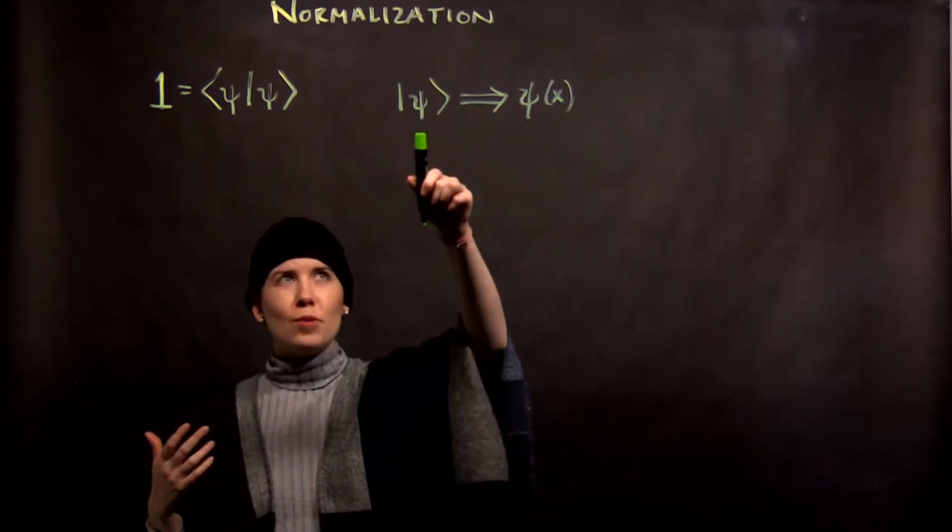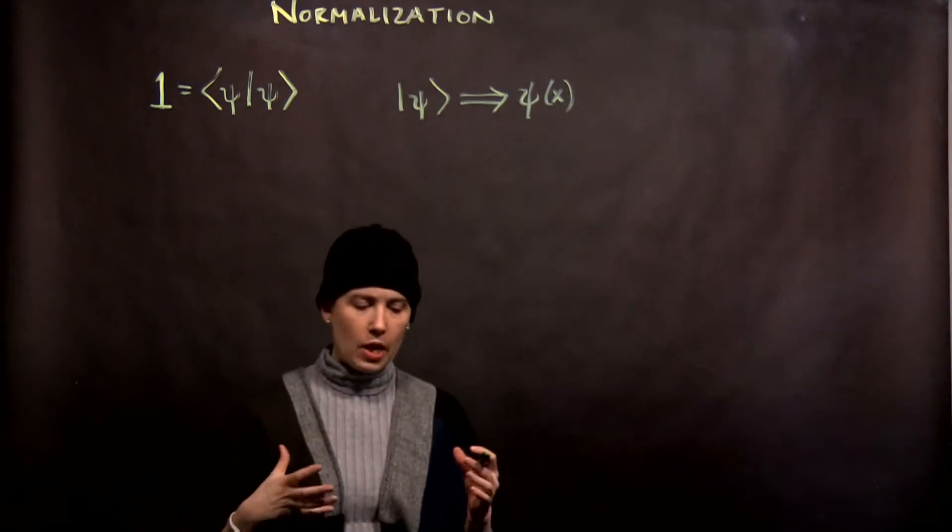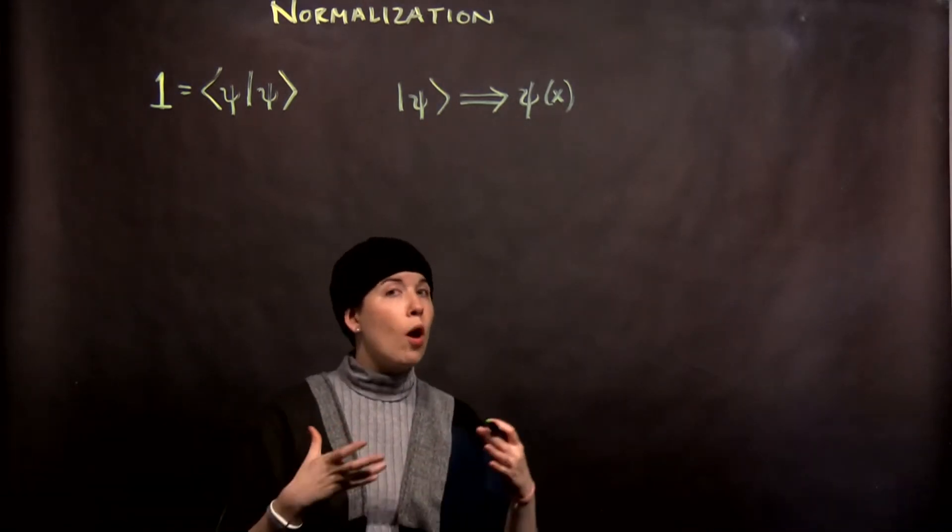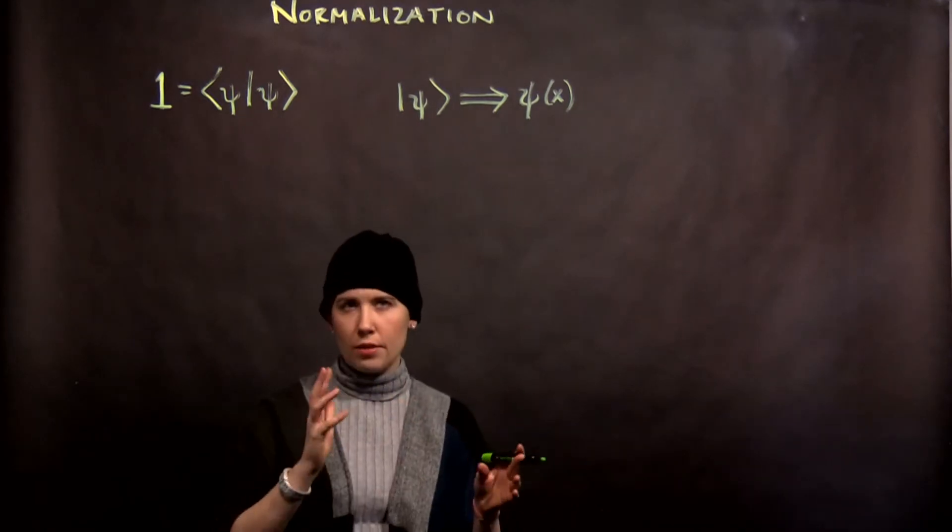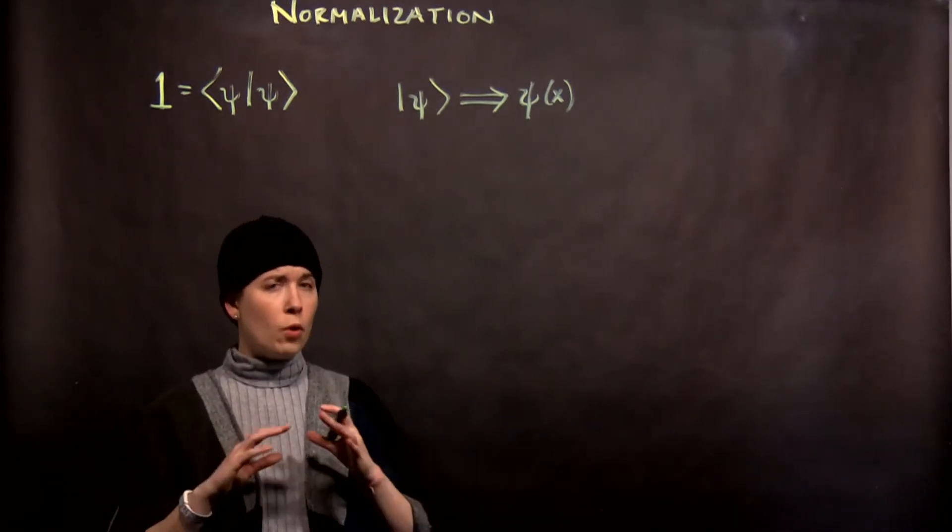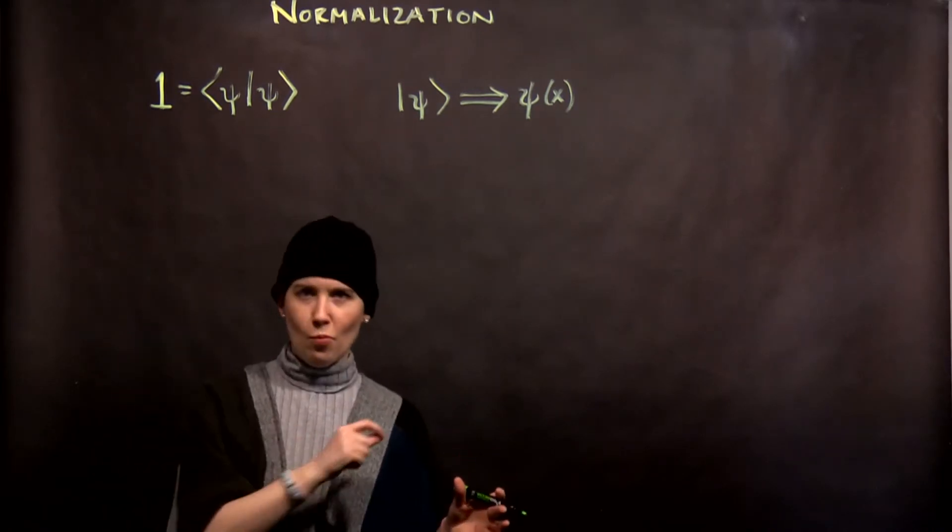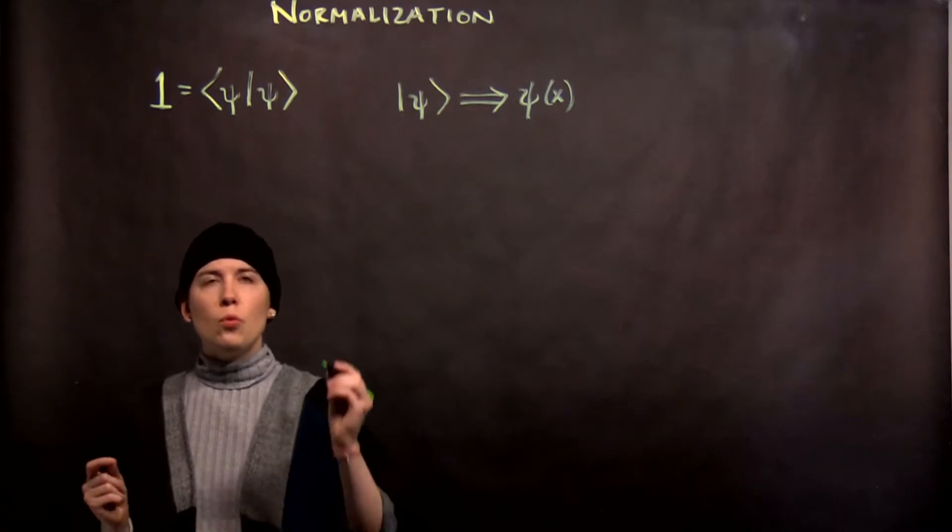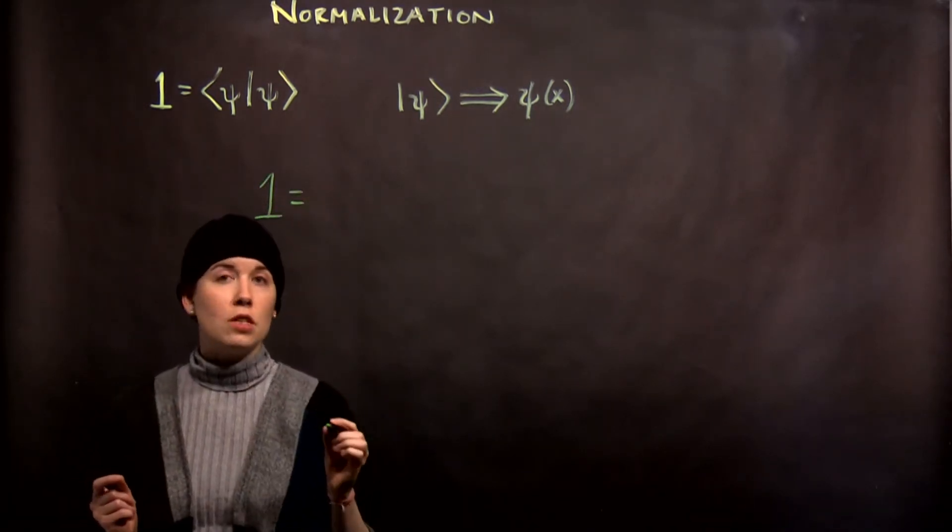We still need our state to be normalized if it's a function of position. One way to think about this is that our wave function relates to the probability of finding our particle somewhere. So we need to be able to find, with 100% probability, our particle somewhere. Right? So one way to say that is that our probability needs to be equal to 1.